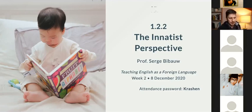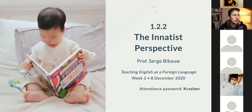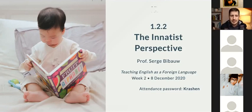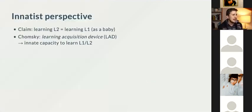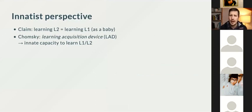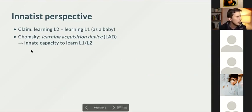The biggest critic of the behaviorist perspective was Noam Chomsky. You know Chomsky for his theory of linguistics. His main claim is also called the innatist claim — the idea that we have an innate capacity to learn language. We do not learn language just because we are exposed to it; we also have inside ourselves, probably somewhere in the brain, a device — a capacity — that Chomsky calls the Language Acquisition Device.